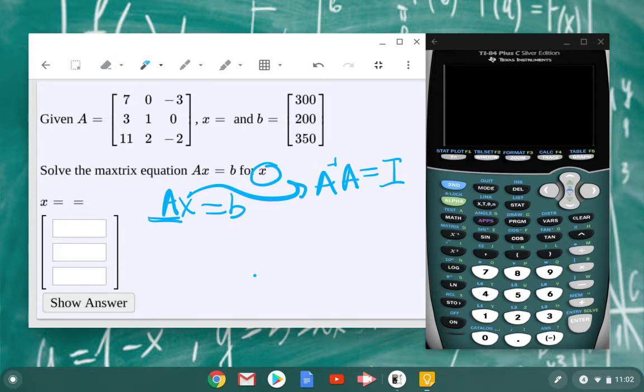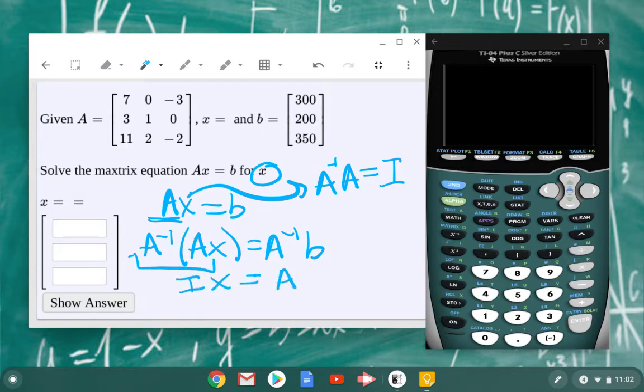We want to go ahead and multiply both sides by A inverse. So that's going to be A inverse times AX equals A inverse B. These two become the identity matrix, so I get the identity matrix times X equals A inverse B, which leaves me with just the matrix X equals A inverse B. Let's go ahead and go on to the calculator.